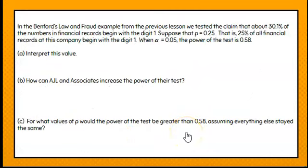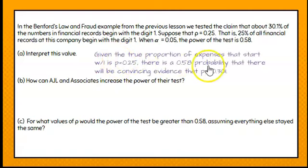In the Benford's Law and Fraud example from the previous lesson, we tested the claim that 30.1% of the numbers in financial records begin with a digit 1. Suppose that P is equal to 0.25. That is 25% of all the records of this company begin with a digit of 1. When alpha is 0.05, the power of the test comes out to be 0.58. So interpret this value. Given that the true proportion of expenses that start with 1 is 0.25, there is a 0.58 probability that there will be convincing evidence that the true proportion is not equal to 0.301. Given that the true proportion is what the actual value is, here's your power number, and here is what's in your alternative hypothesis.